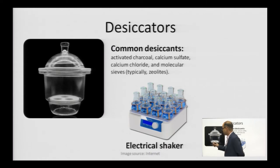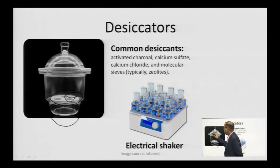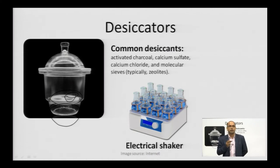This is the desiccator which we have used. We put the desiccant in this block and there is a perforated plate over it. The content to be dried is placed in a china dish over the perforated plate. The desiccator assembly is closed with an air lock and sealed using silica grease. Commonly used desiccants include activated charcoal, calcium sulphate, calcium chloride, and molecular sieves which are typically zeolites.